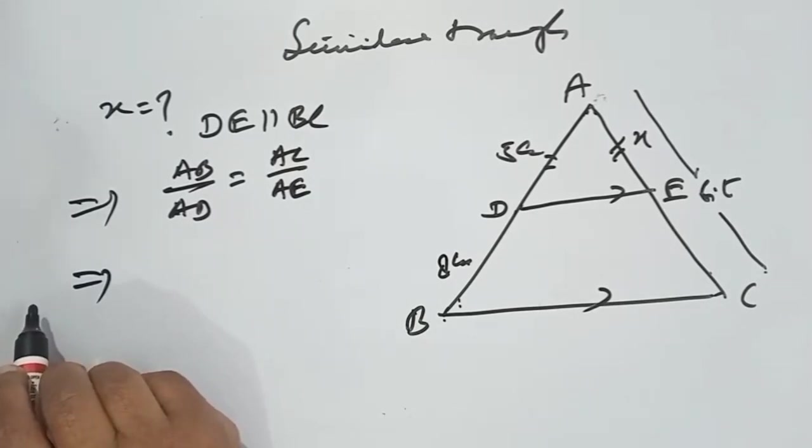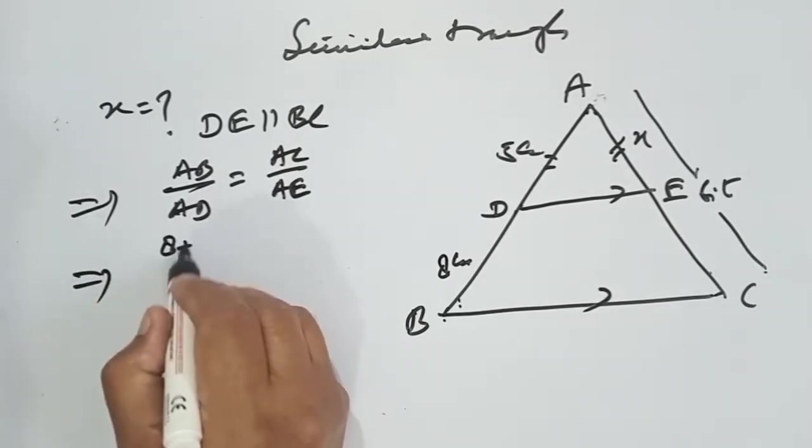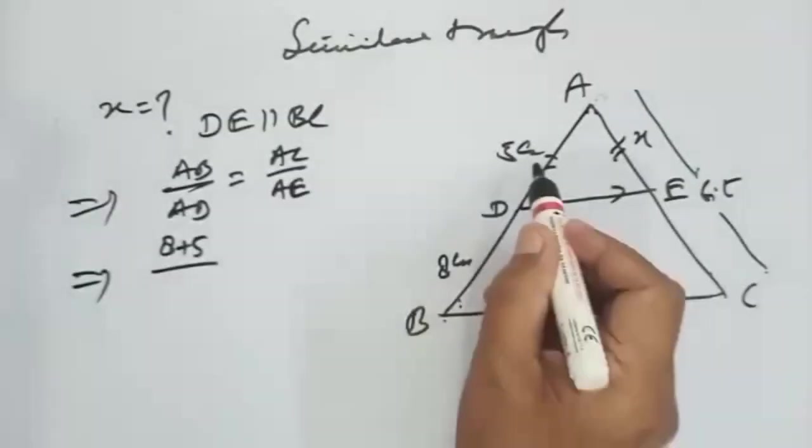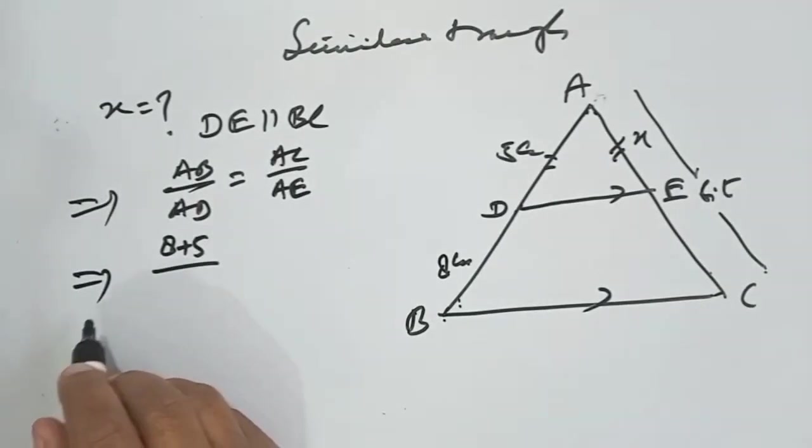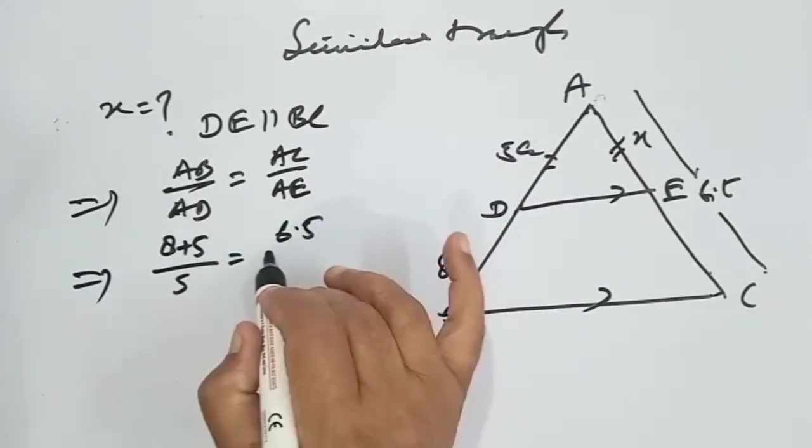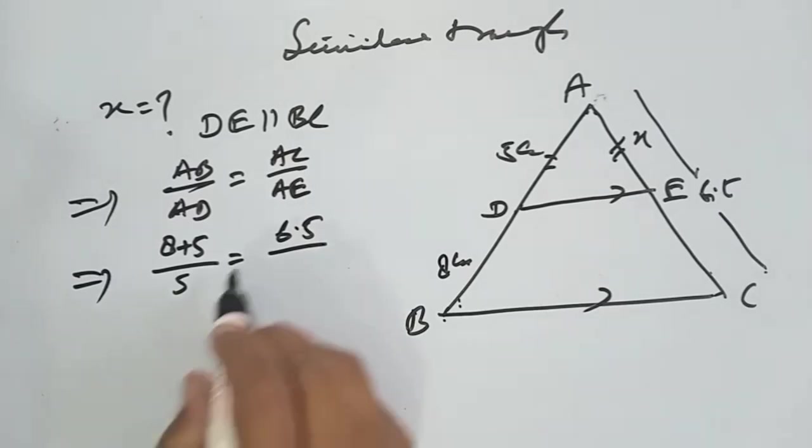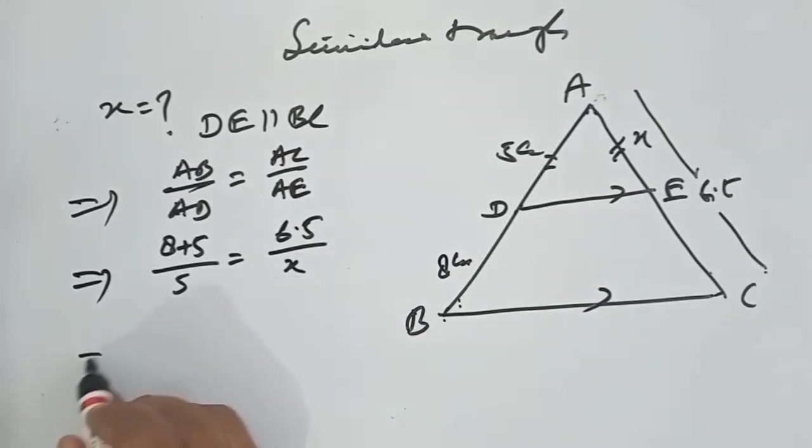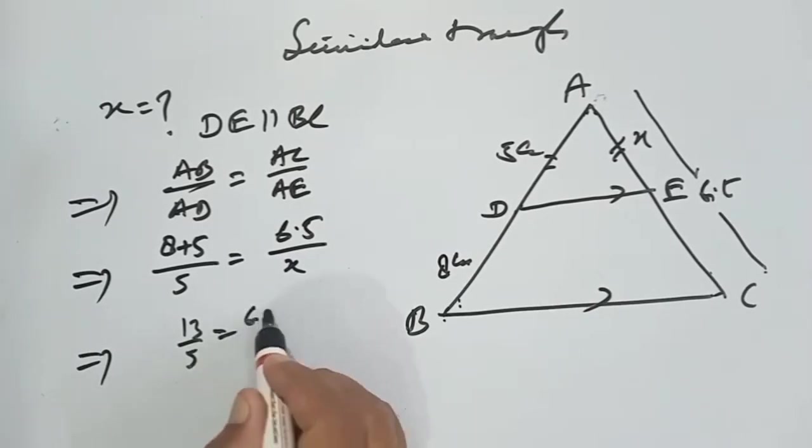AB is 8 plus 5 upon AD. AD is 5, is equal to AC is 6.5, and AE is x. So this implies that 13 upon 5 is equal to 6.5 upon x.